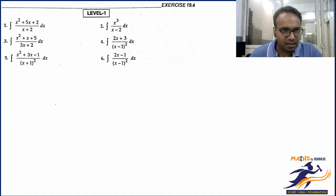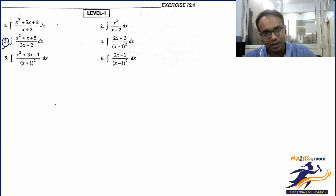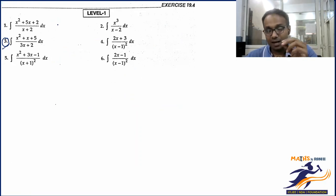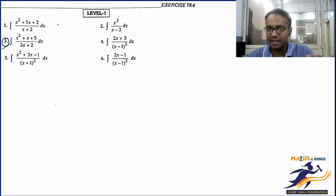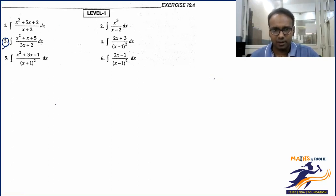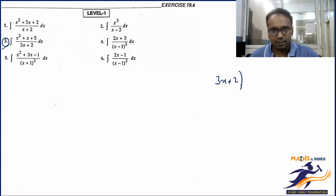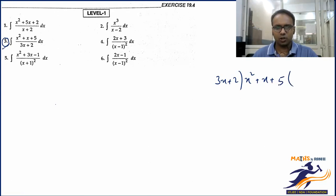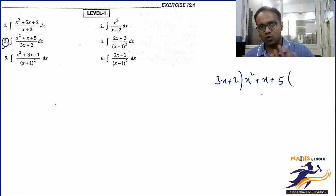Let me take an improper example — question number 3. It's improper because the degree of numerator is 2 and degree of denominator is 1. For such cases, long division is always suggested. Use long division to convert it into a proper form first. Long division is a very important tool when dealing with improper rational functions.